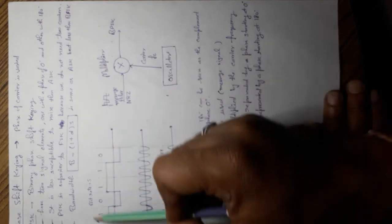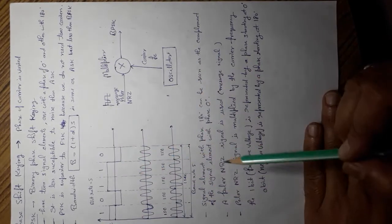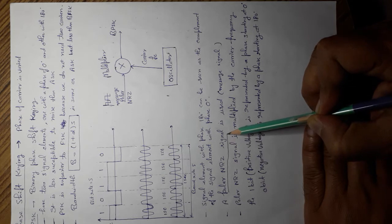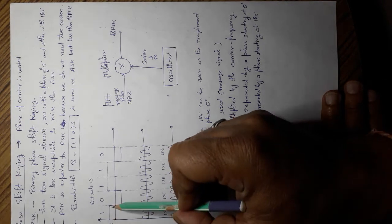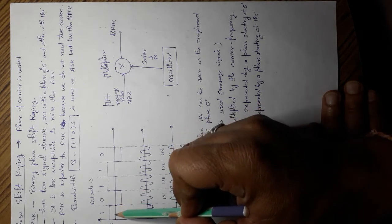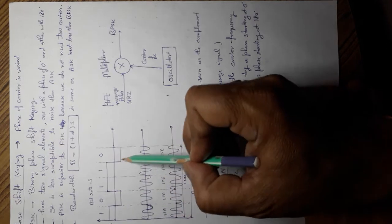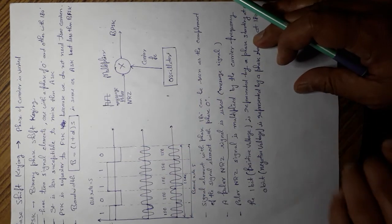And the second one is we are going to be using a polar non-return to zero signal. This one is a polar non-return to zero, because it will not return at zero. It has polarity in both directions.